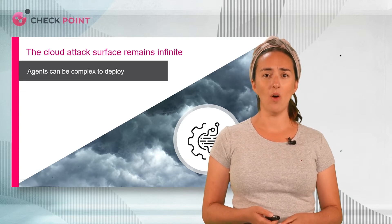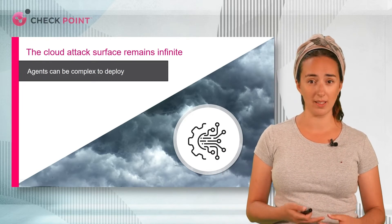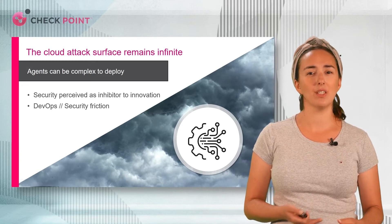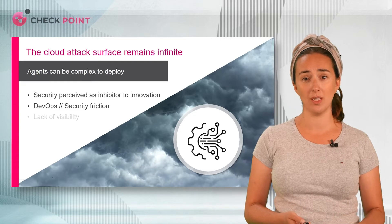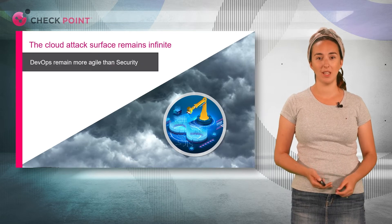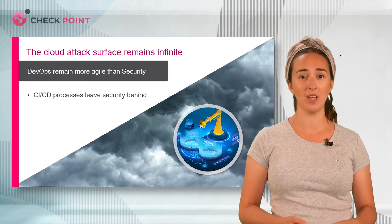The next challenge is getting visibility into the runtime environment, and often teams rely on agents on every microservice — whether container or VM — which is a very complex undertaking. There's a perception that security inhibits innovation, and that's another challenge when dealing with innovative agile DevOps teams. Even where shift left security tools are in place, that still leaves a gap with a lack of visibility into runtime. Many organizations have yet to address shift left at all, since CI/CD processes are fast and it's impossible to properly protect the application or cloud environment without security that's automated and built into the development pipelines.